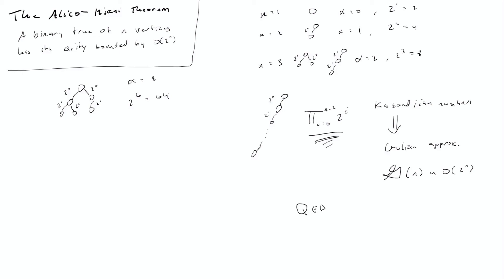And so this basically wraps up our proof very nicely. We've shown that the maximum possible arity of a binary tree is this product expression, then made the realization that this is the closed form expression of the Kazanjian numbers, and used the Ghoulian approximation to show that the nth Kazanjian number is of the order of two to the n. Therefore the arity is bounded by order of two to the n. QED — we have proved our theorem. And so in closing remarks, if none of this made sense and it sounds like I was just making things up, you are absolutely correct. Happy April Fools! There's no such thing as the Alicomiani theorem, the Kazanjian numbers, the Ghoulian approximation, or the arity of a binary tree or graph. There is a concept of arity in computer science, but it has absolutely nothing to do with graphs. I hope you enjoyed this video — maybe you found it a little funny. I'll be back eventually with some real content. Bye for now.